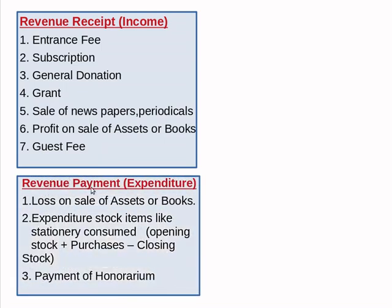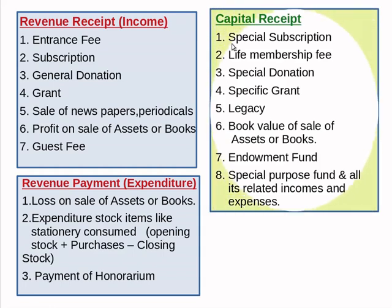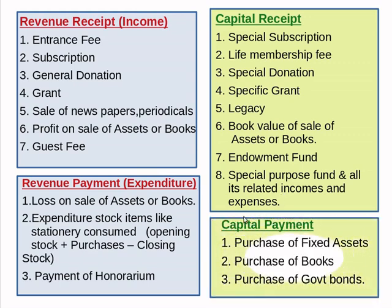Similarly, revenue payments or expenditures include loss on sale of assets or books, expenditure on stock items like stationery consumed. Capital receipts include special subscription, life membership fee, special donation, specific grant, legacy, book value of sale of assets or books, and all related income and expenses. Capital payments include purchase of fixed assets, purchase of books, and purchase of government bonds.